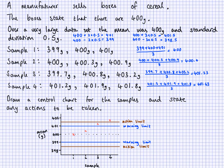After samples one and two, no action is taken — everything is within the warning limits. At sample three, it's outside the warning limit but inside the action limit, so we take another sample immediately to see if there's anything wrong. We take sample four, and sample four came out outside the action limit. Anytime anything comes outside the action limit, the action to be taken is to reset the manufacturing process, because it's very unusual — approximately a 0.2% chance — for a mean to fall outside the action limit.